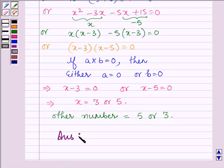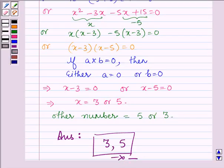Hence, our answer is the two natural numbers are 3 and 5. This completes the session. Bye and take care.